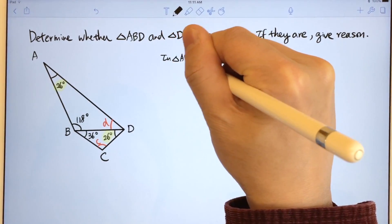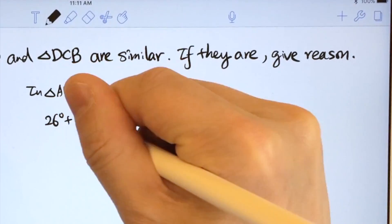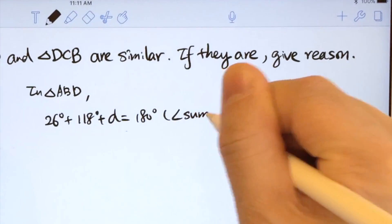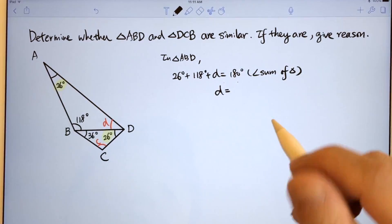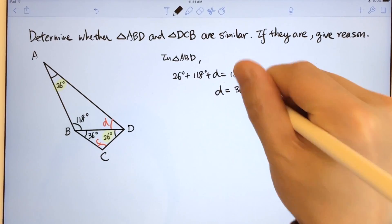In triangle ABD, 26 plus 118 degrees plus D equals 180 degrees. Therefore D is 36 degrees.